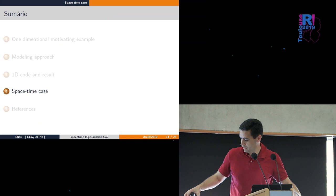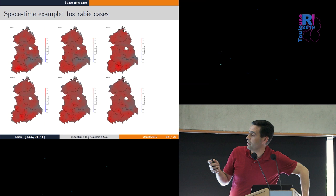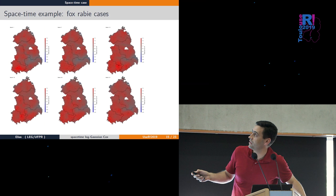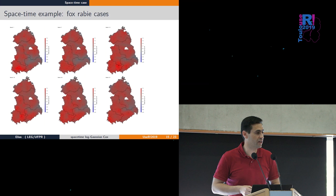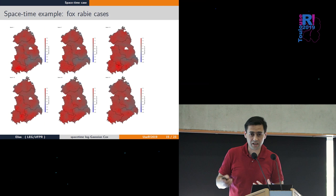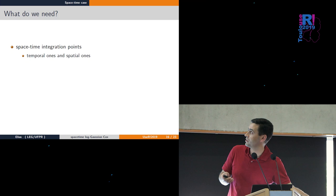For the spatial-temporal case, we have fox rabies cases - the dots are tiny but over different consecutive months there's variation in this field. Now we have a spatial component and time, so three dimensions.